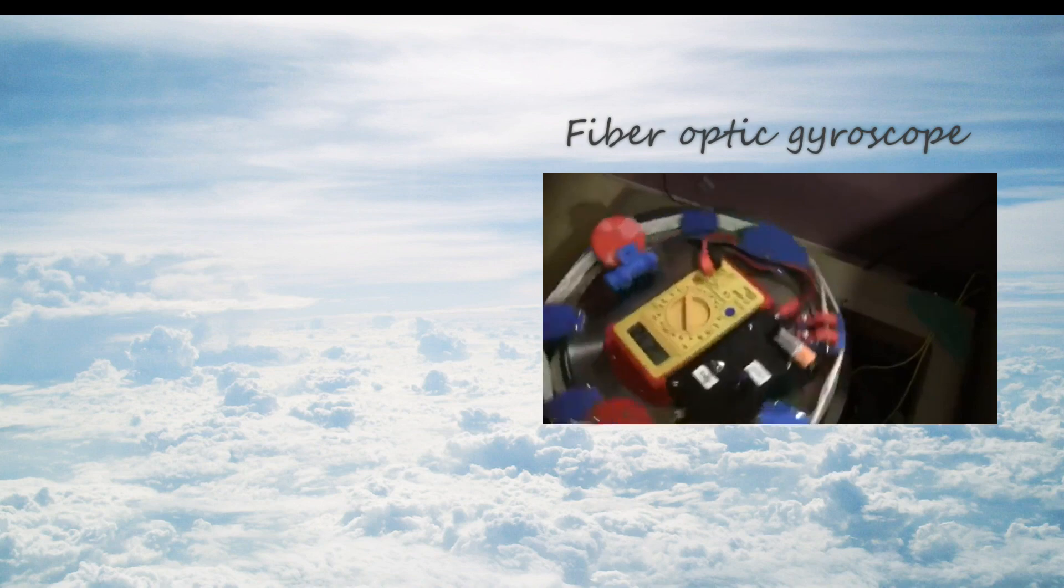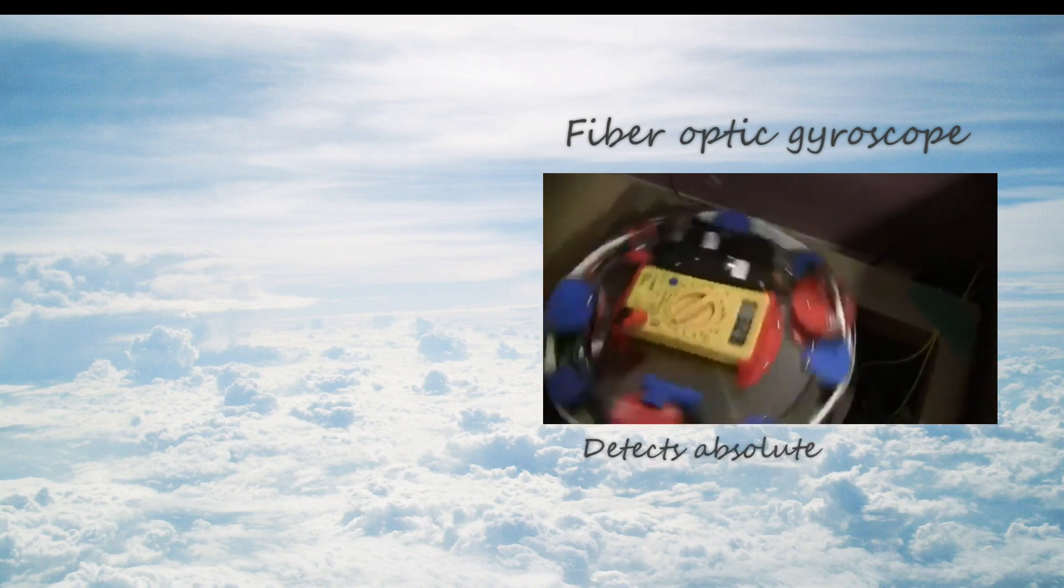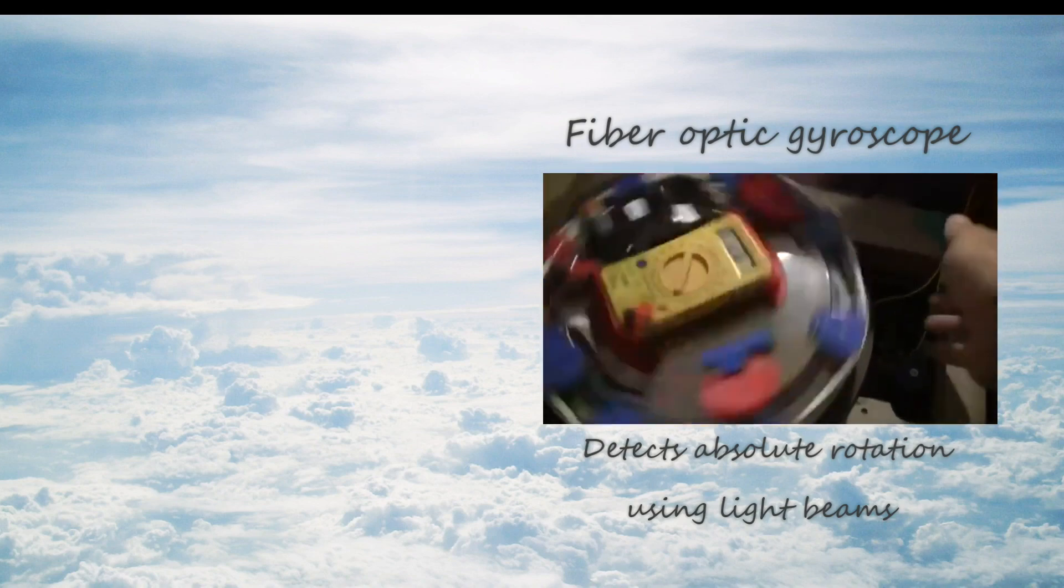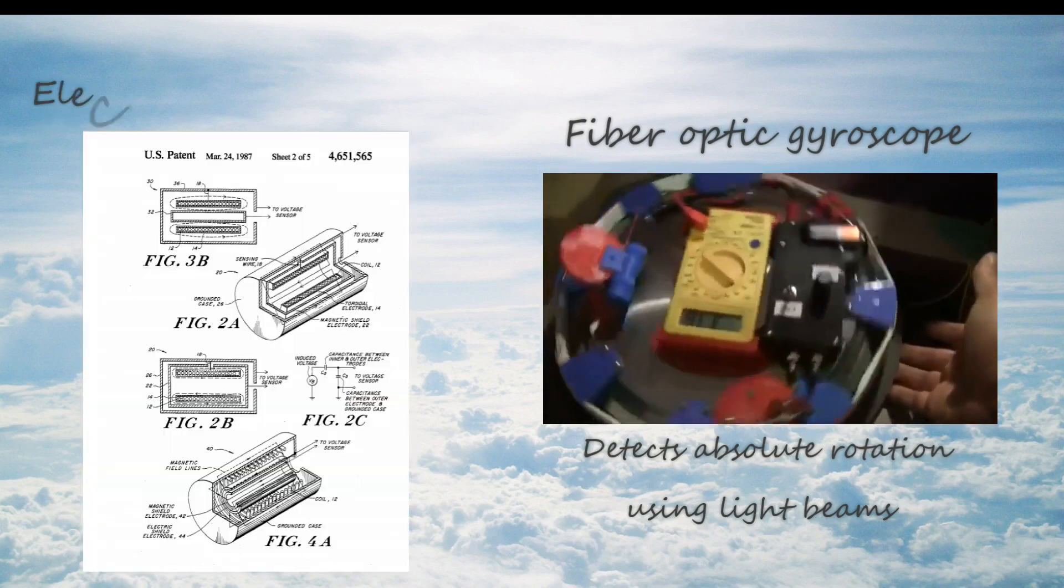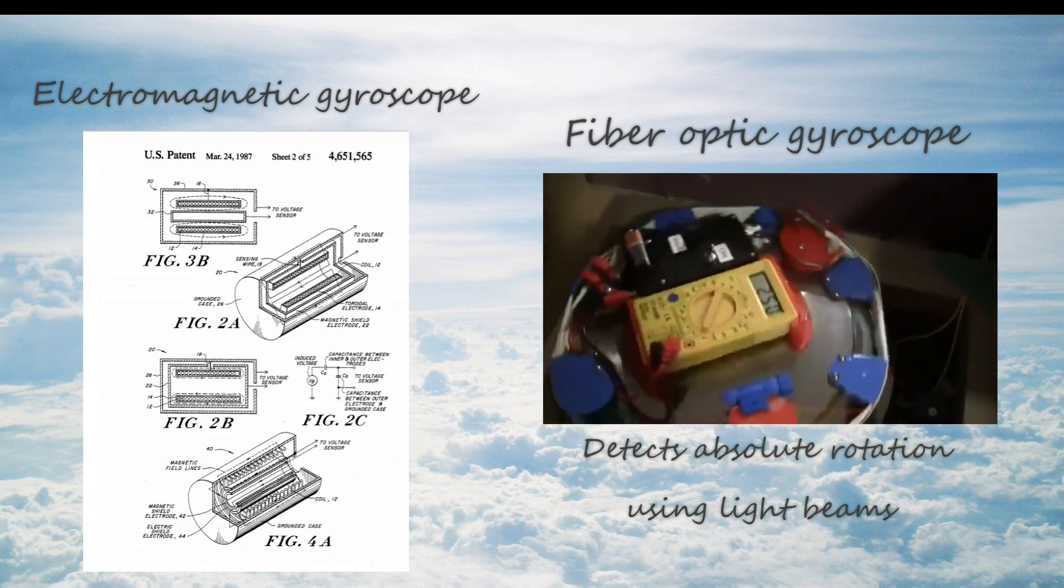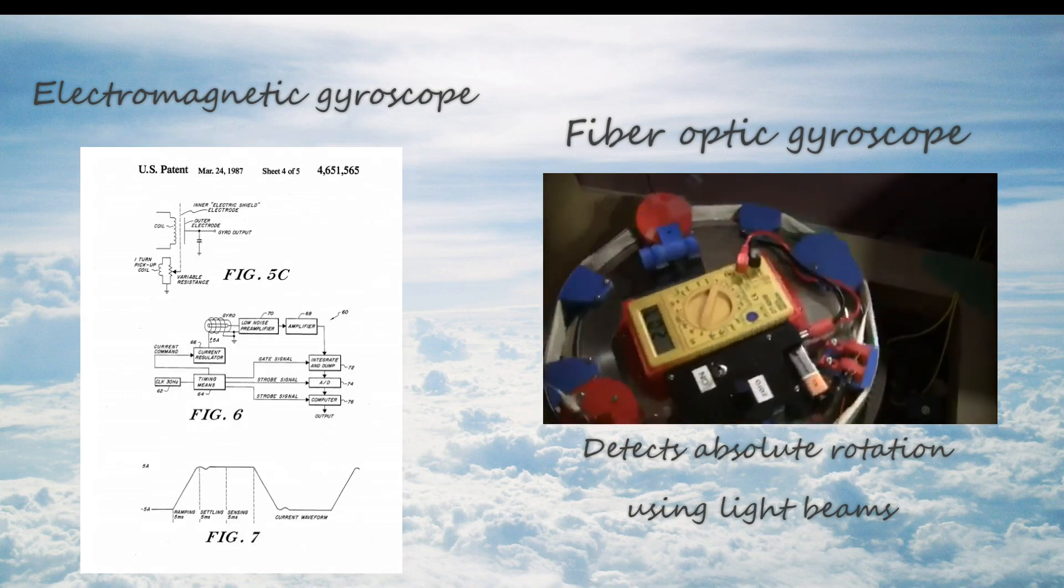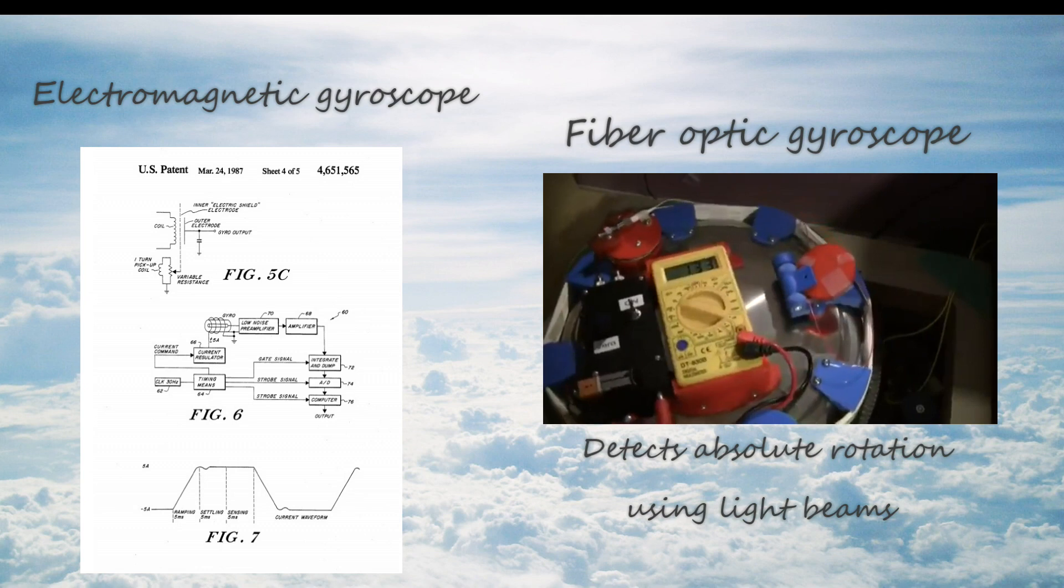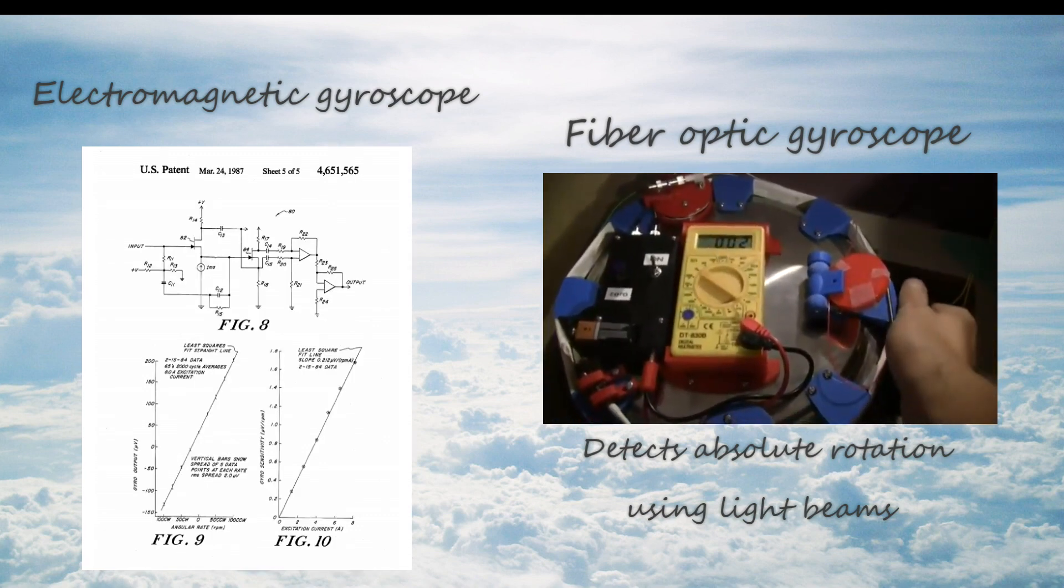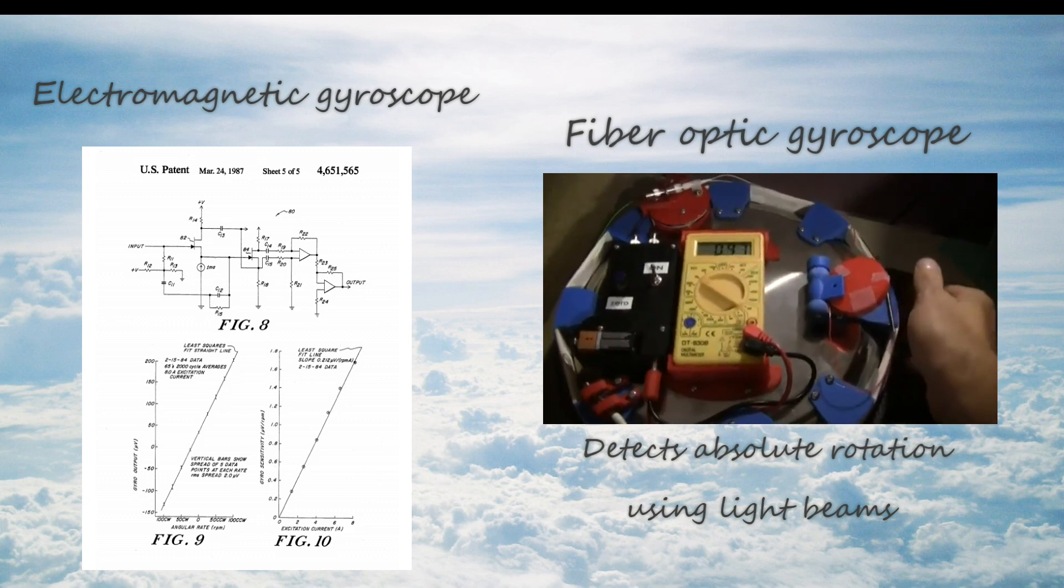Whereas the fiber optic gyroscope detects absolute rotation by measuring differences in the arrival time of counterpropagating beams of light, the Keene version detects absolute rotation electromagnetically. The Keene patent provides many more details on the best ways to make the device, including electronic circuitry and even examples of the solenoid construction parameters that work the best. The patent also provided test data to back up their claims.